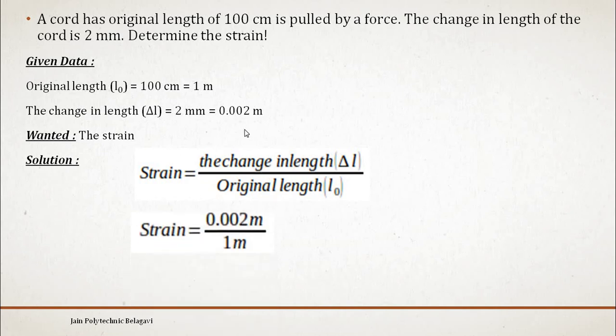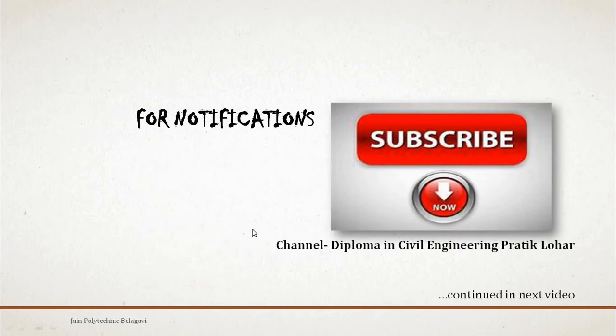Now put the value of change in length. Both the values should be in one same unit. So ΔL is taken as 0.002 meter and original length is taken as 1 meter. So 0.002 divided by 1 will remain 0.002.